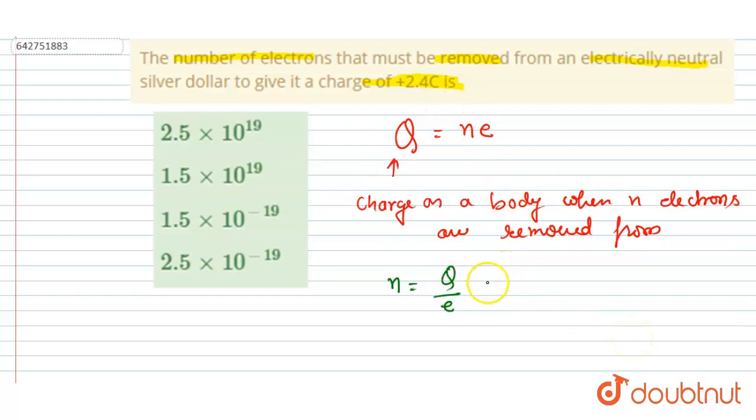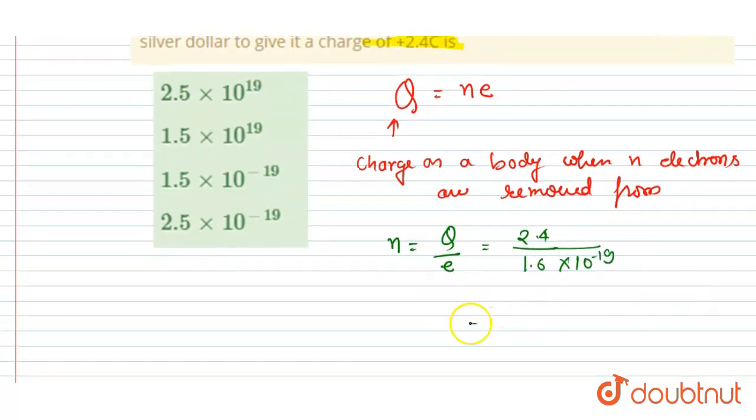I will write like this: so 2.4 is the charge that I want on the body. In division, I will write 1.6 into 10 to the power minus 19 coulomb.